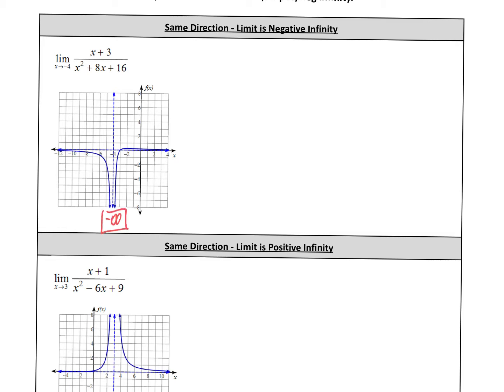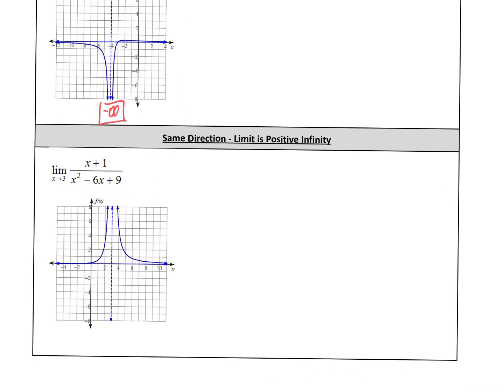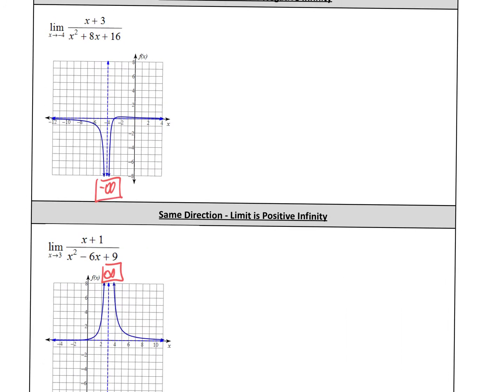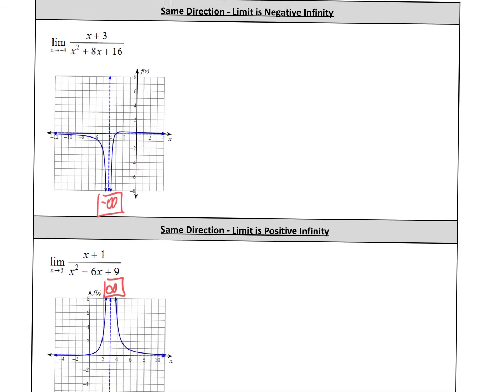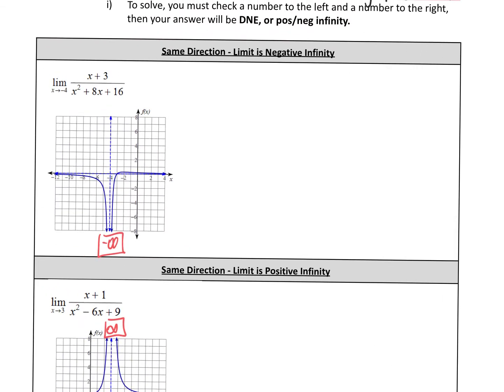In the second example, we have the limit as x approaches three. The limit from the right and the limit from the left are both approaching the same y value of positive infinity. So when you have these two scenarios, it's clear as day what the answers are. Now how do we do this algebraically?